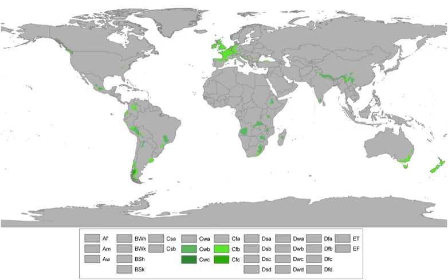Oceanic climates in Europe occur mostly in northwest Europe, from Ireland and Great Britain eastward to central Europe. Most of France, Belgium, the Netherlands, Denmark, Germany, Norway, the north coast of Spain north of Navarre, Galicia, Asturias and Cantabria, the western Azores off the coast of Portugal, the south of Kosovo, and southern portions of Sweden also have oceanic climates.